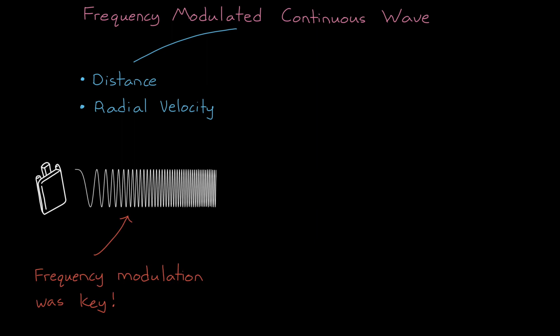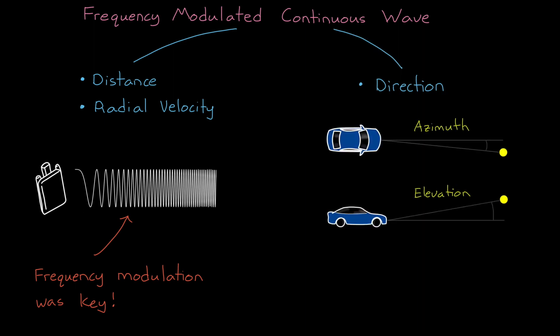In this video, let's talk about how FMCW radar is also able to determine the direction to an object, both horizontally in azimuth and vertically in elevation. And to do that, we need to move past modulation schemes and turn our attention to the antenna, or more precisely, to the antenna array.